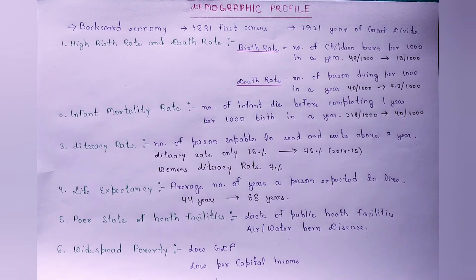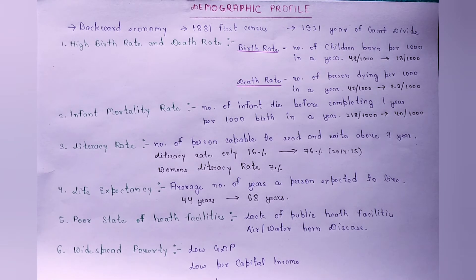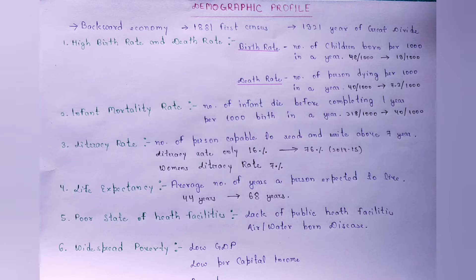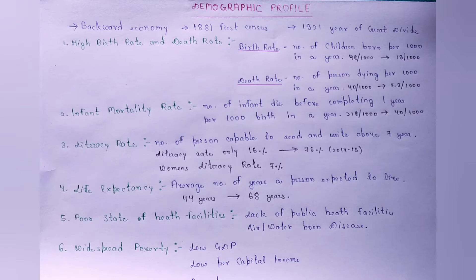Now we are moving to our next topic: demographic profile on the eve of independence. Demographic profile एक तरह का statistical data होता है जिसमें हम past और present के data को compare करते हैं और उन differences को जानने की कोशिश करते हैं। उस वक्त जो हमारा economy था वो backward economy था, agrarian economy था, stagnant economy था।